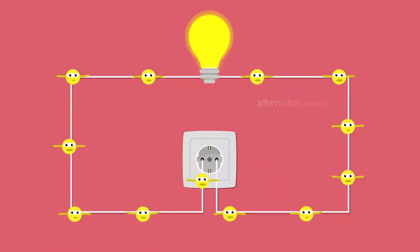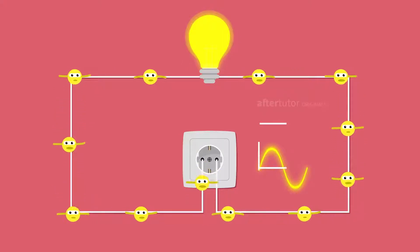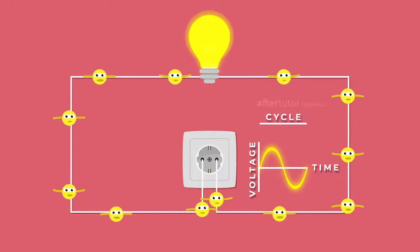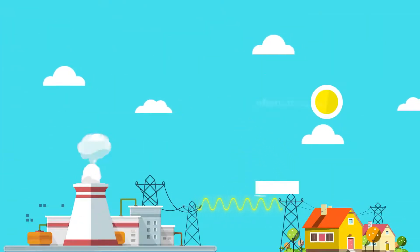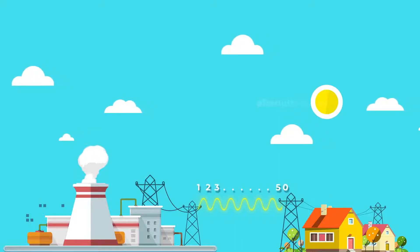AC is bi-directional, which means it alternates to and fro in a circuit. This to and fro motion is represented as a cycle. The power coming to our homes has a frequency of 50 Hz, which implies 50 cycles take place in one second.